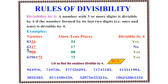The next number is 6217. The 1s and 10s places of this number give us 17. We know that 17 is not divisible by 4. Therefore, the whole number 6217 is not divisible by 4.